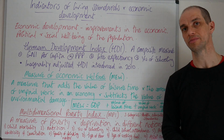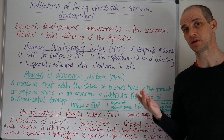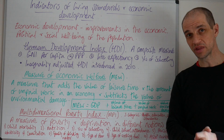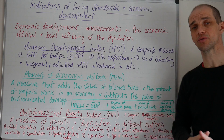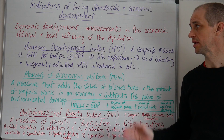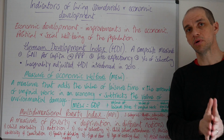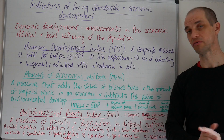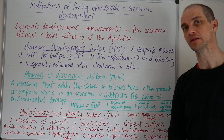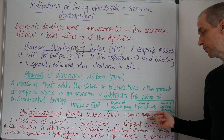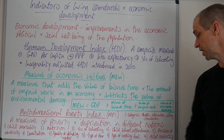Finally, we have the Multi-dimensional Poverty Index. There are three key categories covered with 10 indicators, making this our broadest measurement. Those categories are health, education, and living standards — so there are certain similarities with the HDI. But the Multi-dimensional Poverty Index goes far deeper because it uses those 10 different indicators under those three categories. It's a measure of poverty and deprivation in different nations.